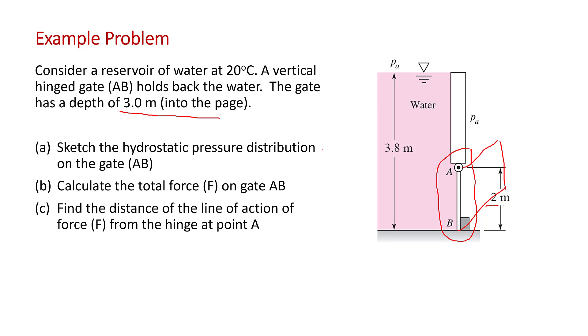So the question asks: A, sketch the hydrostatic pressure distribution on the gate, just on AB. That's a good idea. It's always a good idea to do that, get a physical sense of the problem. Then calculate the total force on gate AB. And then locate the line of action of that force relative to this upper hinge here at A.